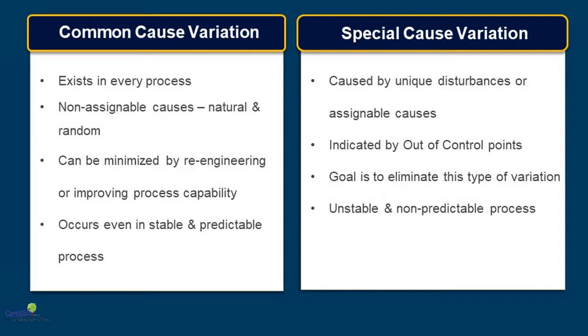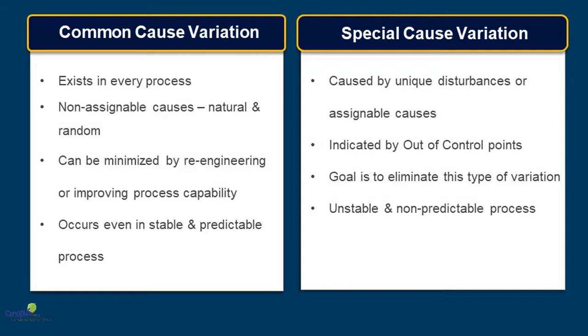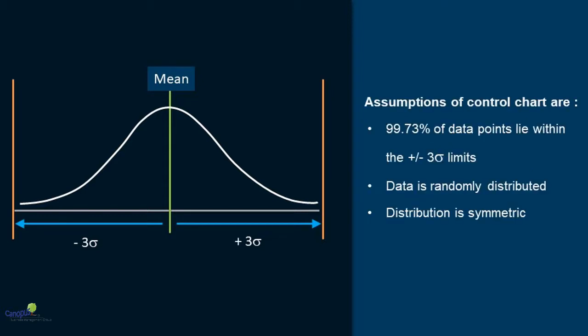Control limits that you have learned about earlier in the control charts are the threshold limits which are used to differentiate between common cause variation and special cause variation. Any data point which falls within the control limit is said to be falling there because of common cause variation. But if that data point goes outside the control limits, then that is because of special cause variation. These control limits are derived from the normal distribution theory. Control charts make three important assumptions. The first assumption is that 99.73% of the data lie between plus or minus three standard deviation limits from the mean.